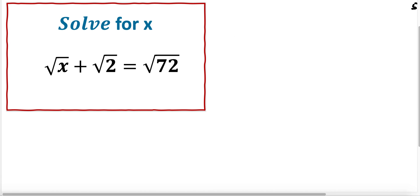Solve the equation for x. We have this equation, so let me rewrite it: we have the square root of x plus the square root of 2 is equal to the square root of 72. To solve this one...